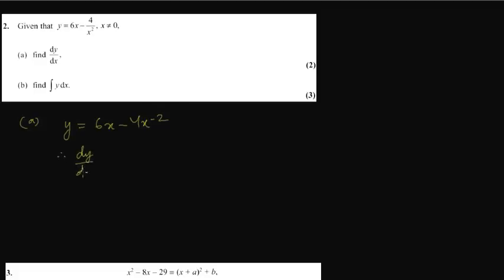Question 2 is calculus. We have y equals this expression. To find the derivative, we need to simplify first: 4 over x squared becomes 4x to the power minus 2 upstairs. So dy/dx equals the derivative of 6x which is 6, and the derivative of minus 4x to the power minus 2 is minus 4 times minus 2, which is plus 8x to the power minus 3.